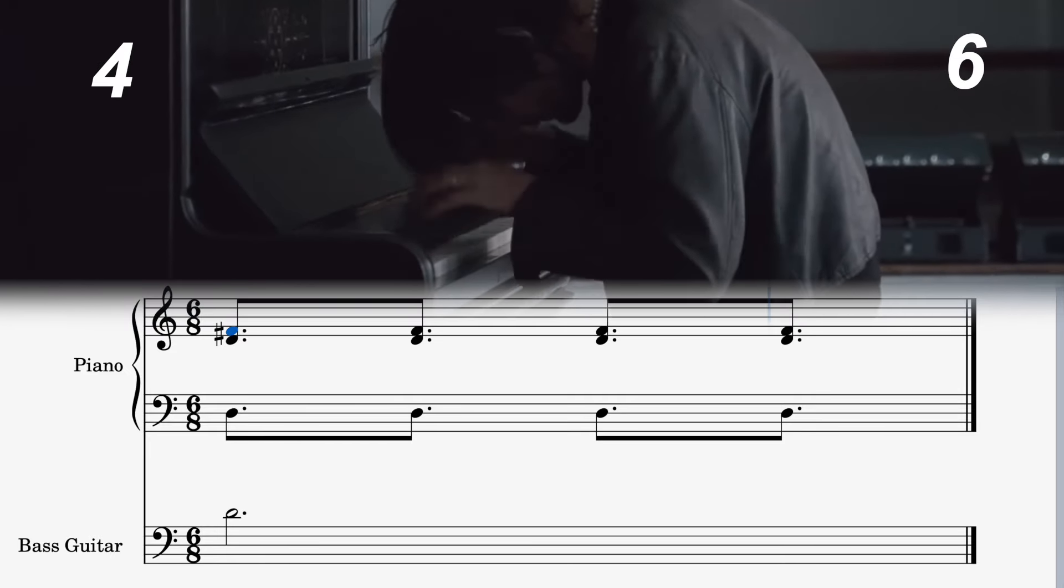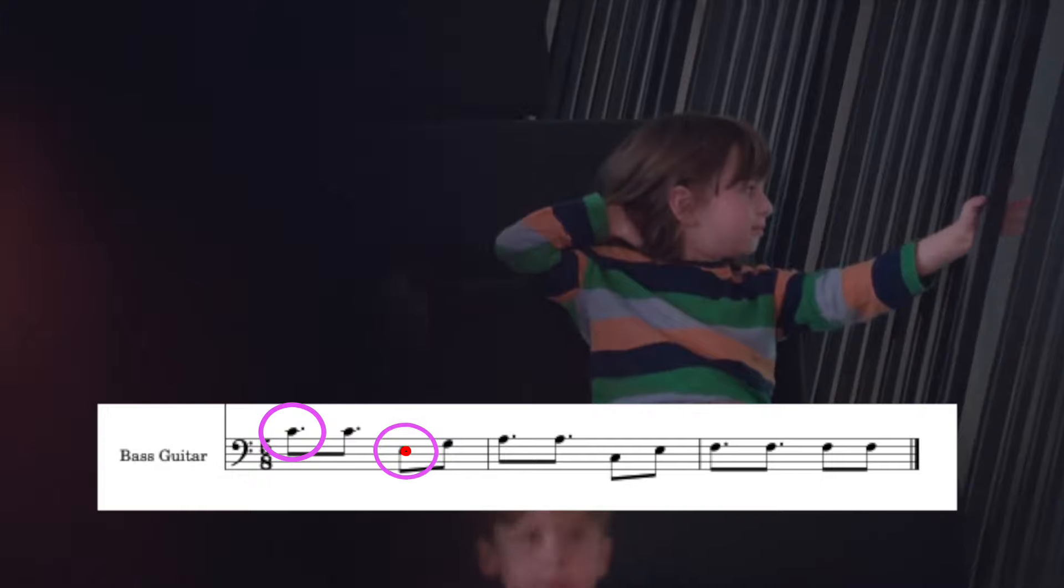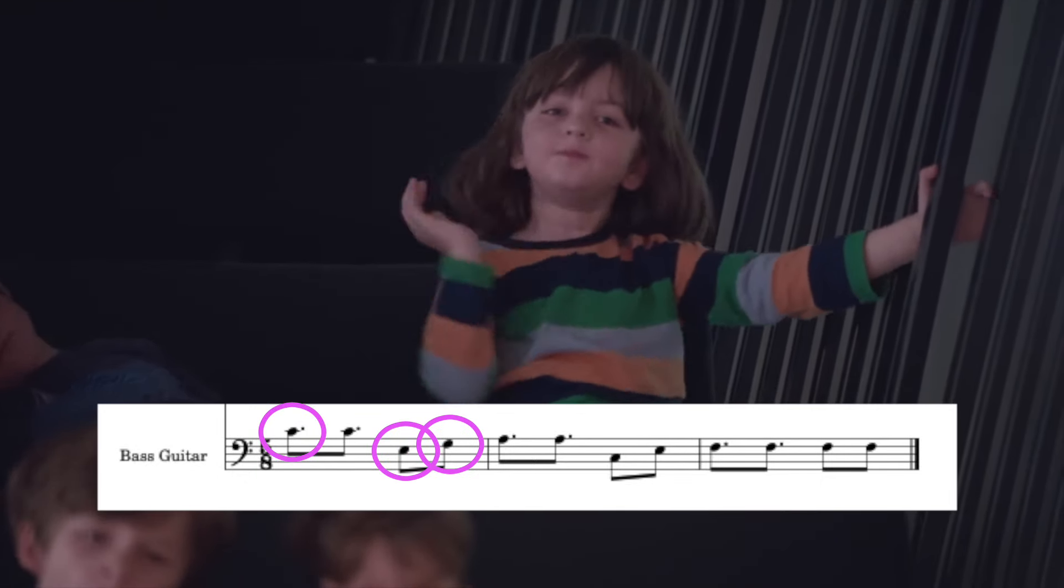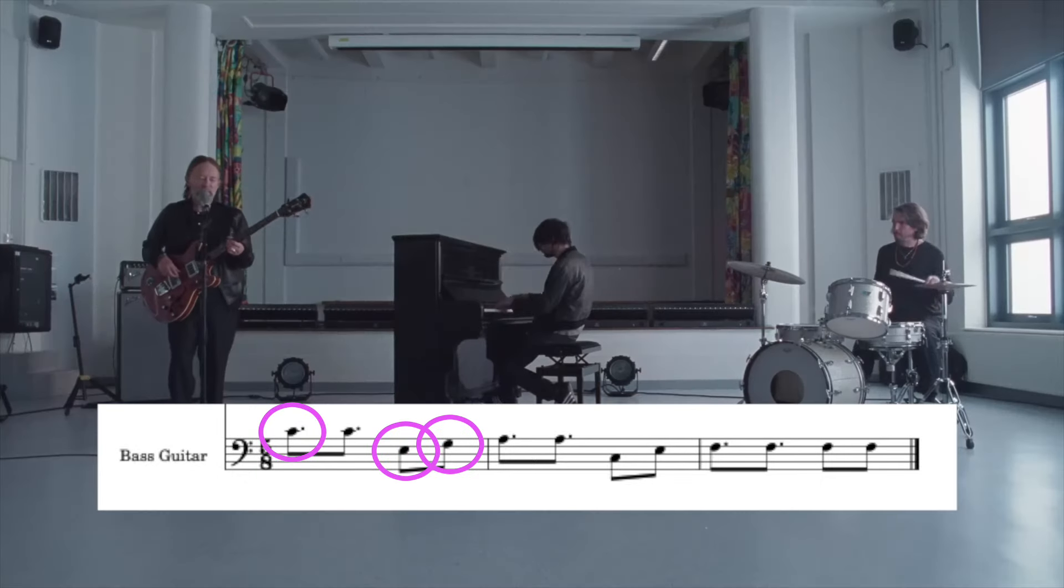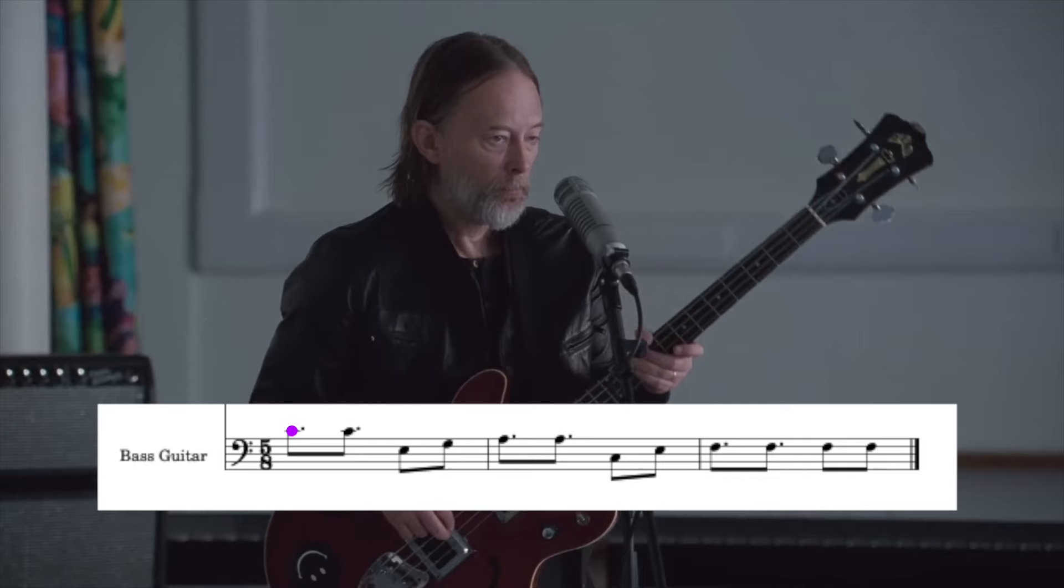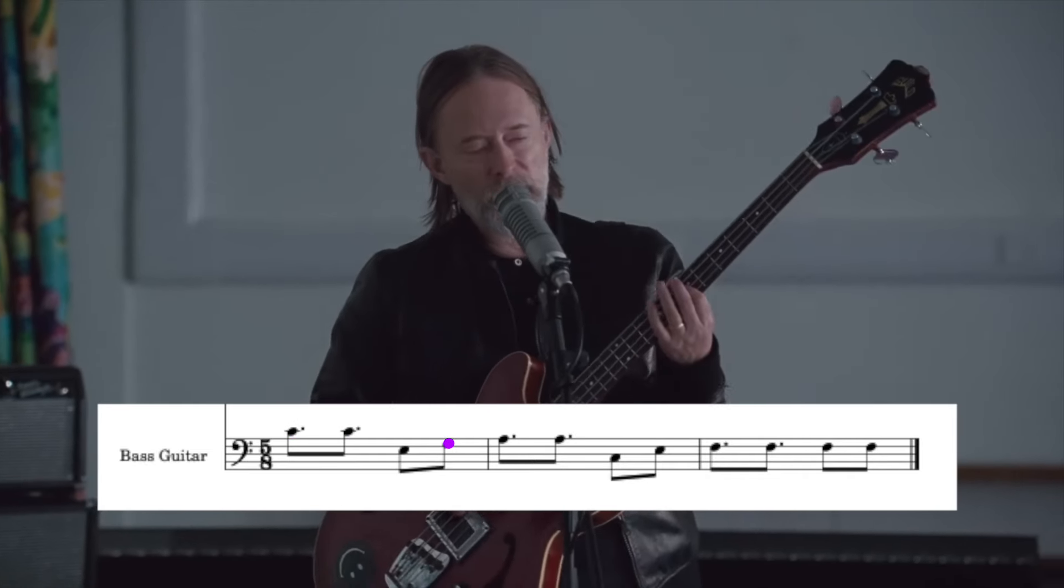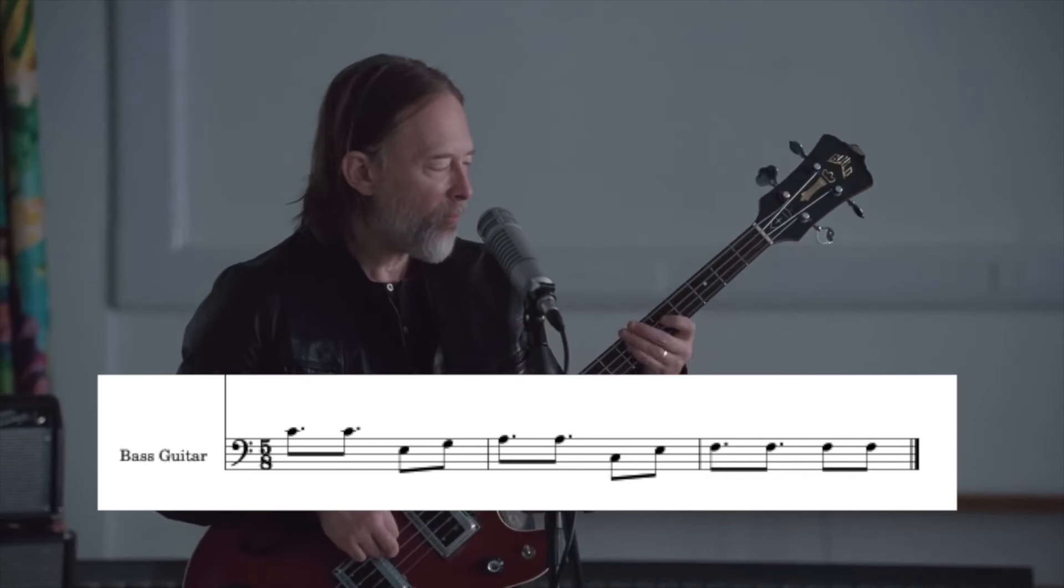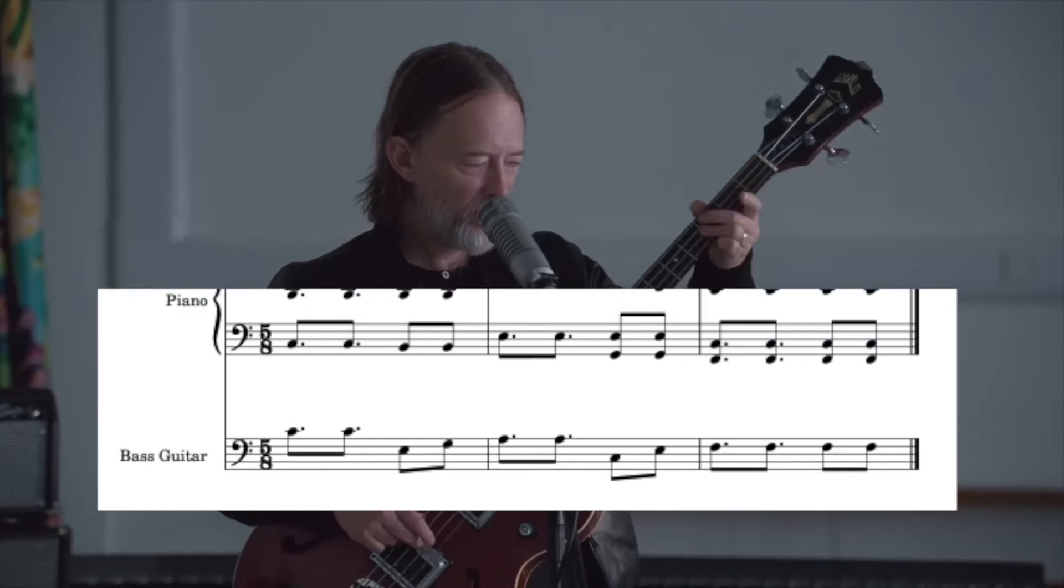On first listen, the bass line sounds quite busy. For example, the first bar is made up of C, E, and G, which is the root, the third, and the fifth—chord tones of the C major chord. But when the piano chords come in the next time through, we can hear that the bass is actually playing just the root notes of each chord. So the entire harmony is quite busy, and the bass line is just following with root notes.